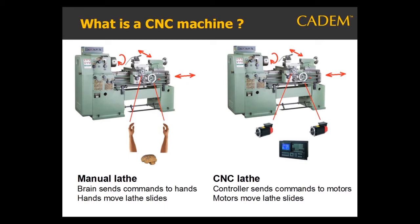The big difference is in the way that the CNC machine is controlled. On a manual lathe, your brain is the controller. It sends signals to the hands, which rotate the hand wheels, which in turn move the tool along the longitudinal and cross slides. Based on feedback from your eyes, you keep adjusting the position and speed, so that you get the required dimensions and surface finish on the part.